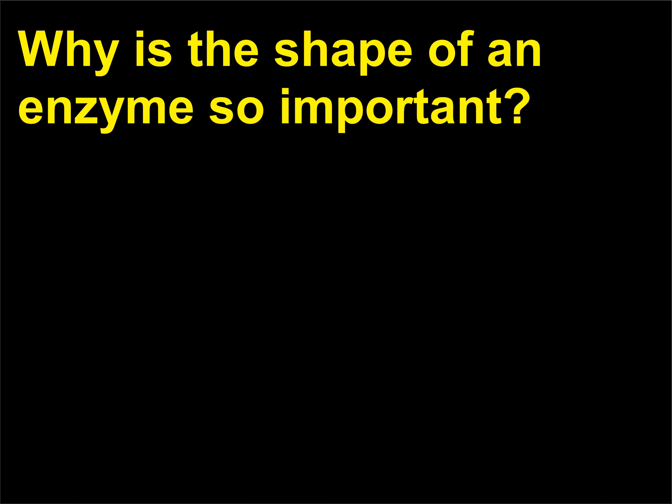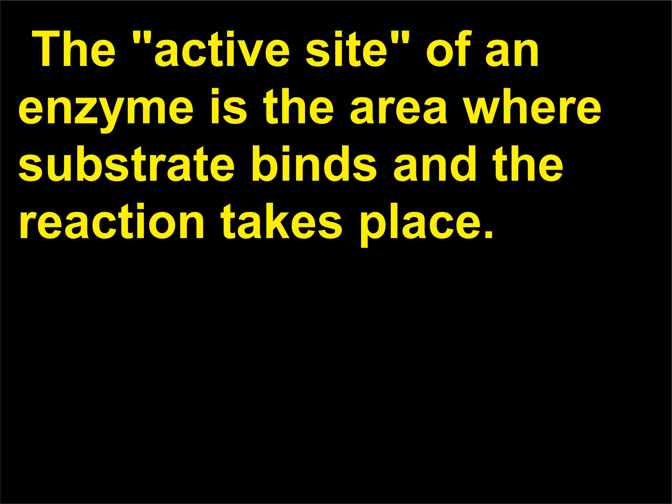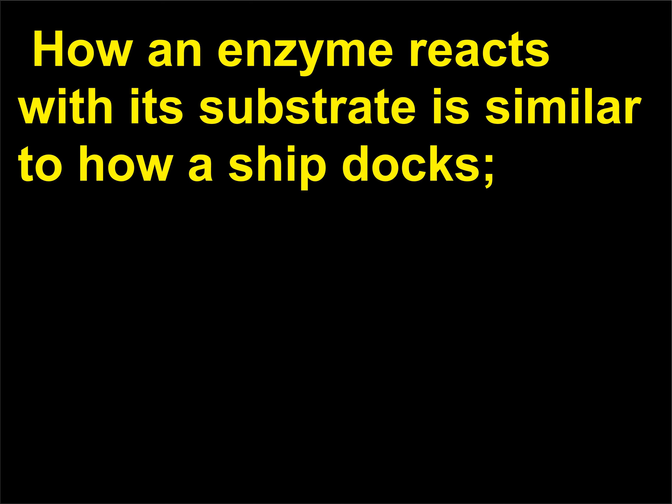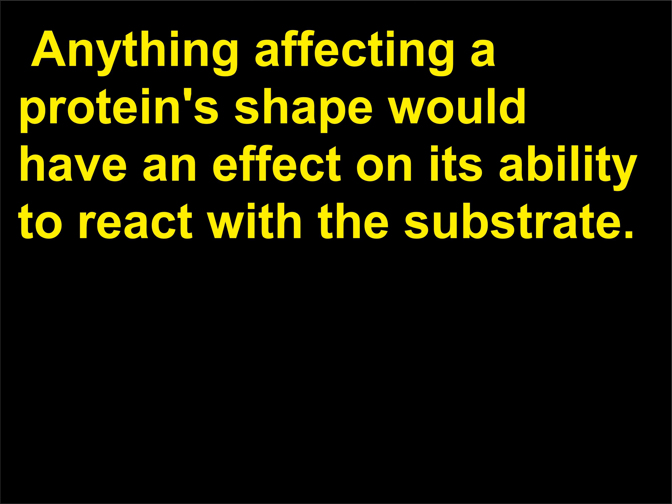Why is the shape of an enzyme so important? Shape is critical to the function of all molecules, but especially enzymes, which are three-dimensional. The active site of an enzyme is the area where substrate binds and the reaction takes place. How an enzyme reacts with its substrate is similar to how a ship docks — there are minor bonds that form between the enzyme and substrate until docking is complete. Anything affecting a protein's shape would have an effect on its ability to react with the substrate.